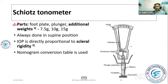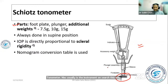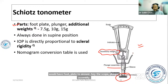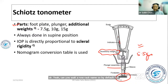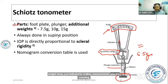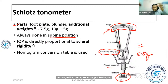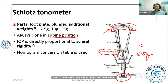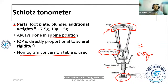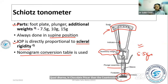In the Goldmann tonometer, the instrument has a flat plate. By default, the weight is set to 5.5 grams. There is an indicator on a scale for measurement. The flat plate is used to indent or applanate the cornea, requiring topical local anesthesia. The IOP measurement depends on scleral rigidity to ensure reliability.